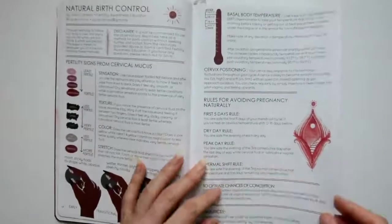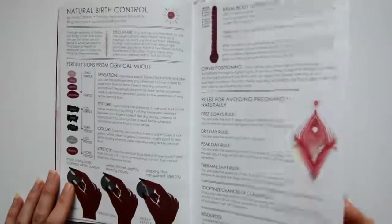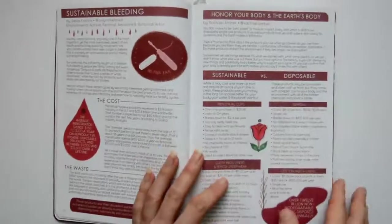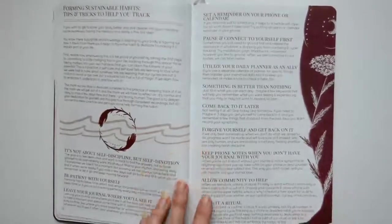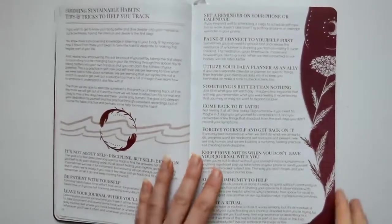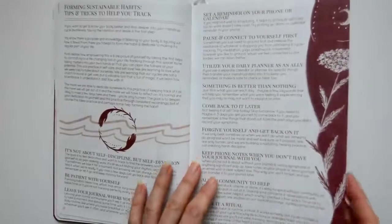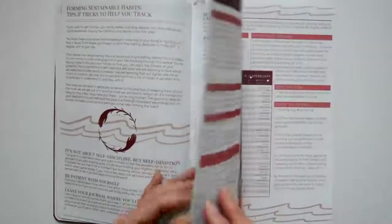Natural birth control. This is a whole subject on its own and I'm not going to go over the details in this video because this is just to show why this is a good journal, but it's just incredible information. I think this planner journal was only maybe $30, maybe $40, but it's so worth it because of the information that you learn.